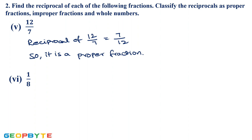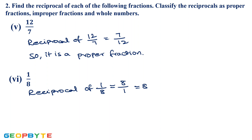Next: 1/8. Reciprocal of 1/8 is 8/1, which is nothing but 8. So here it is a whole number. Whole numbers are a collection of all positive integers including 0. So it is a whole number.